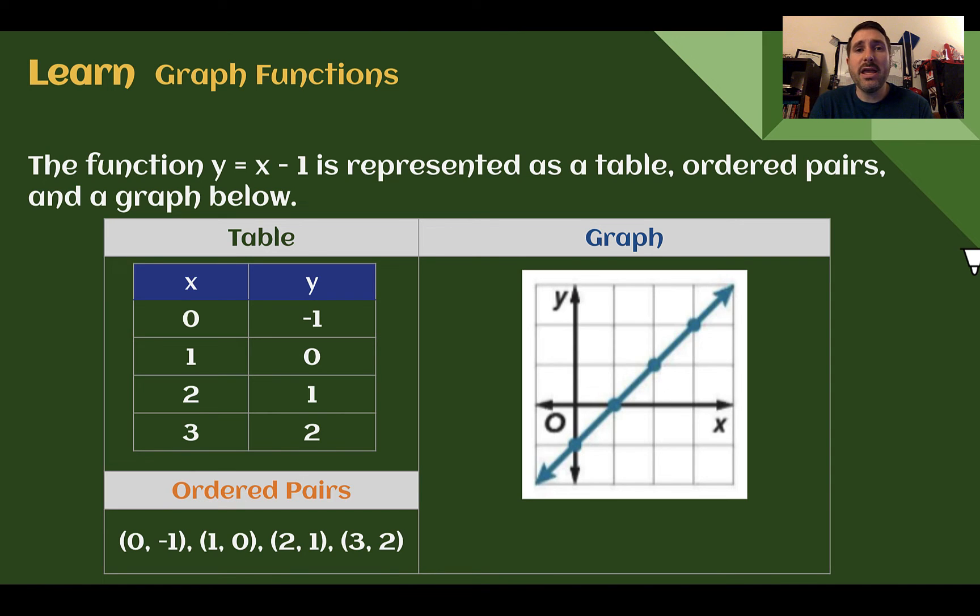Here we have the function y equals x minus one represented as a table, as ordered pairs, and as a graph. If we look here, we're seeing our function table first. Here's our input. We can plug in zero, one, two, and three. If we plug in each of these values, following the rule x minus one, we get our outputs: negative one, zero, one, and two.